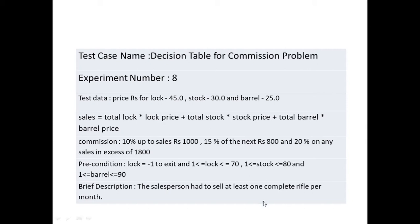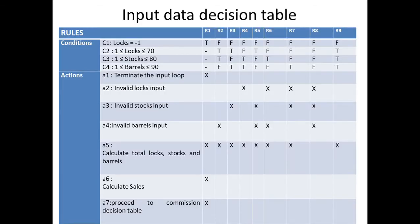The total locks, stocks, and barrels a salesperson can sell in a month are 70 locks, 80 stocks, and 90 barrels. The description states the salesperson must sell at least one complete rifle per month — one stock, one lock, one barrel minimum. The maximum count for each is as stated. The commission is calculated once the salesperson finishes one month.